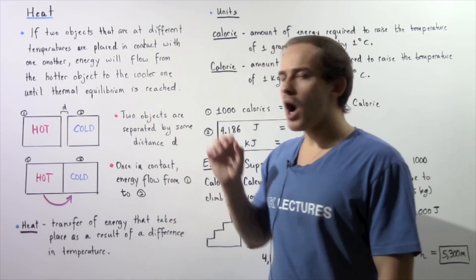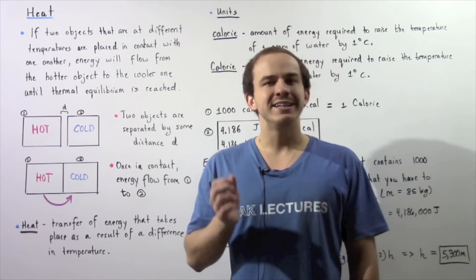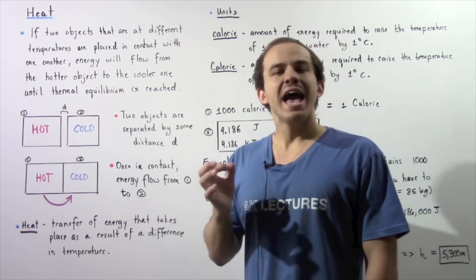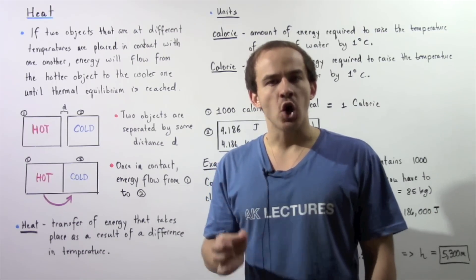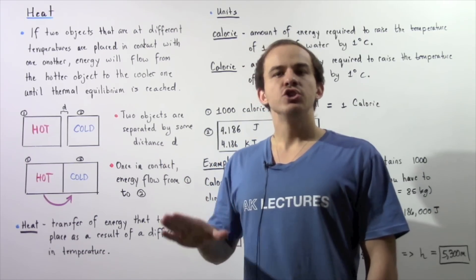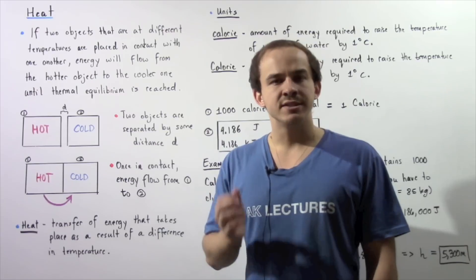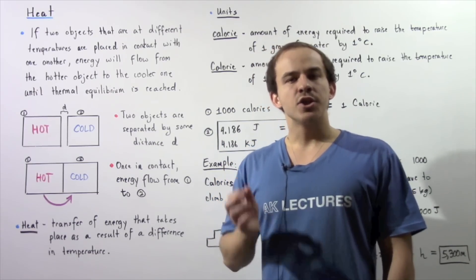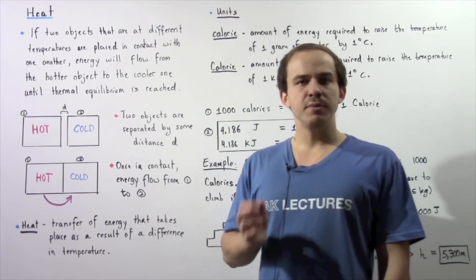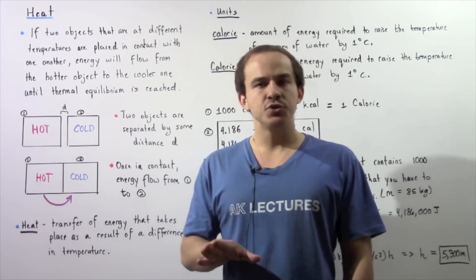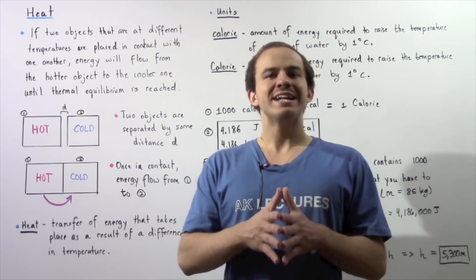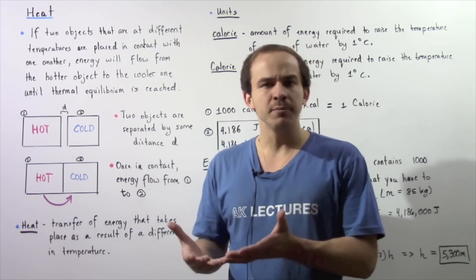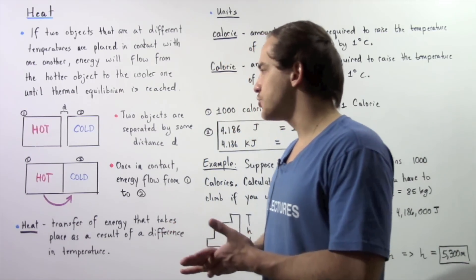If two objects that are at different temperatures are brought in contact with one another, energy will begin to flow from the hotter object to the cooler object until thermal equilibrium is established. Thermal equilibrium simply means that the two objects which were initially at two different temperatures have reached the same temperature.